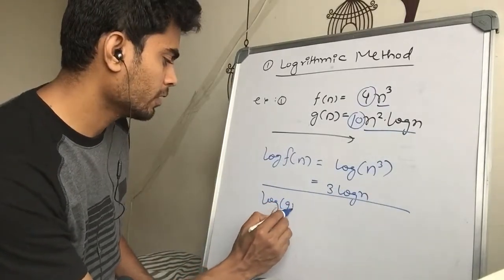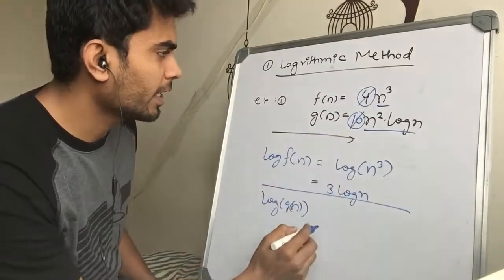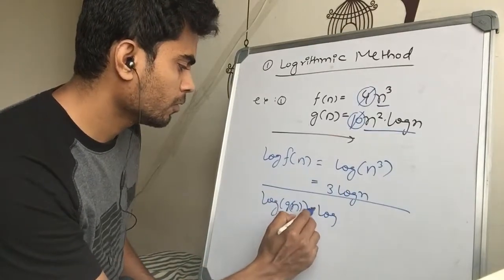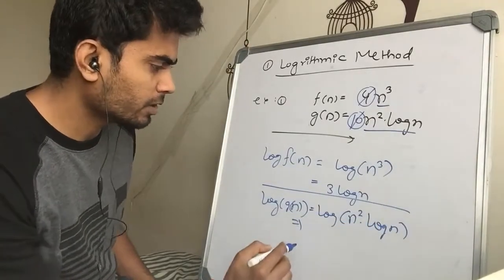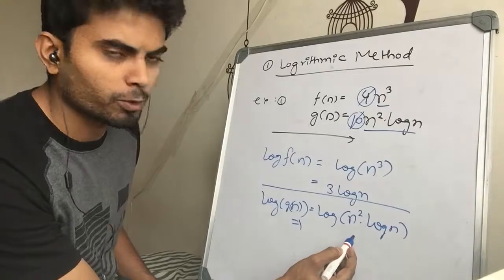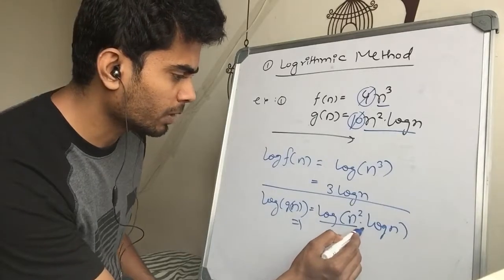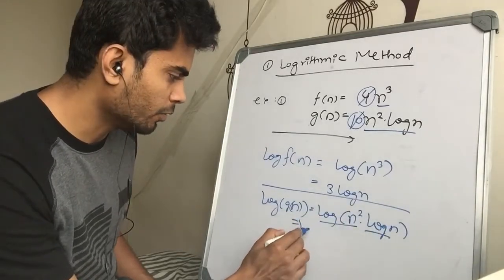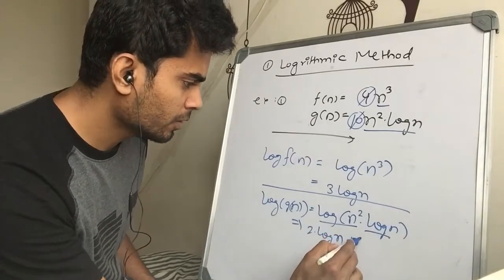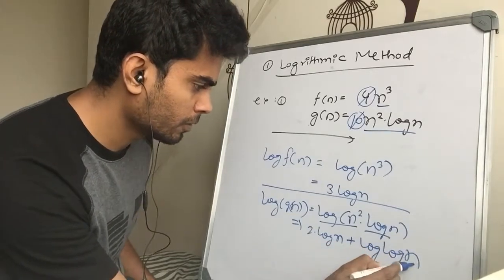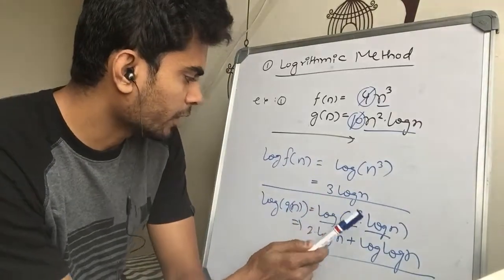For g(n), we are ignoring the leading constant, so we have n² log n only. So we take log of n² times log n. Applying the rule log(a·b) = log a + log b, this becomes log(n²) + log(log n), which equals 2 log n + log(log n).